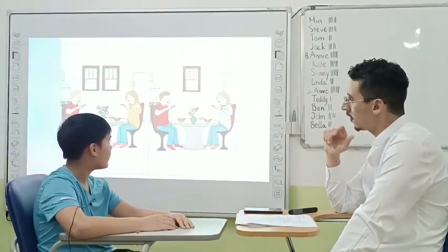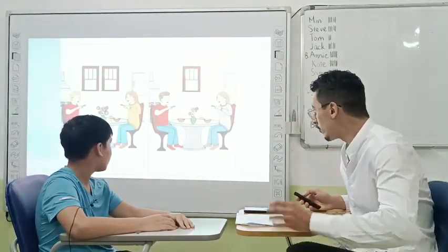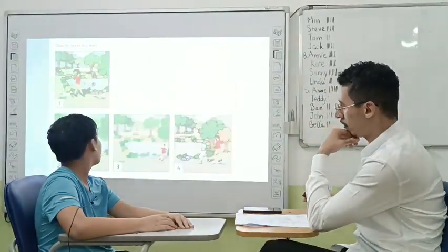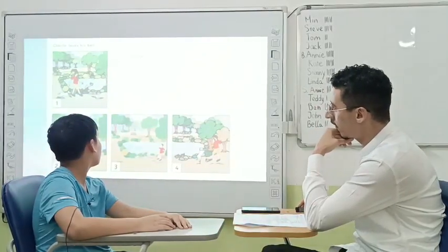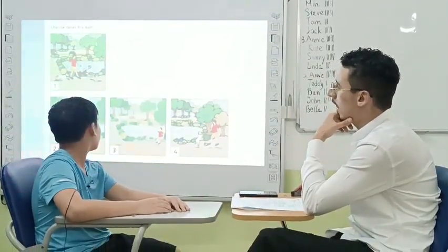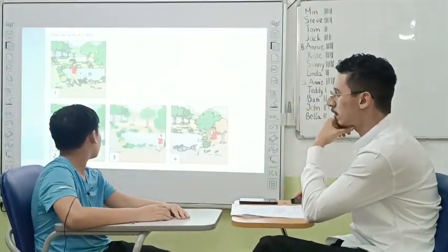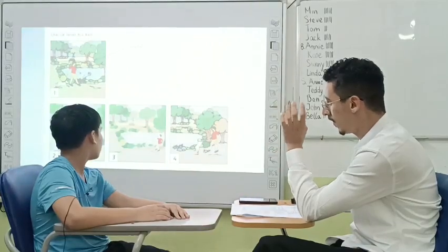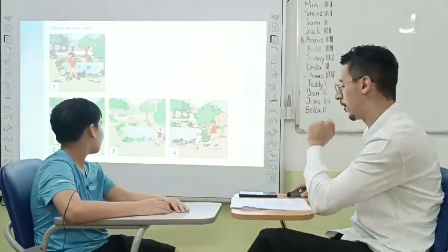Very good job. Now let's move to the second picture. Now, this is a story. All right. It's about a boy called Charlie. He loses his ball. I want you to talk about the story in picture two, three, and four.